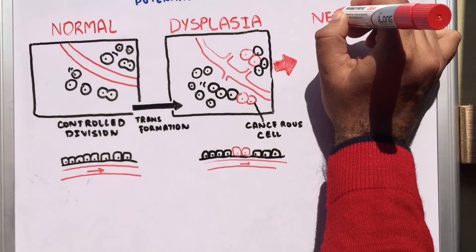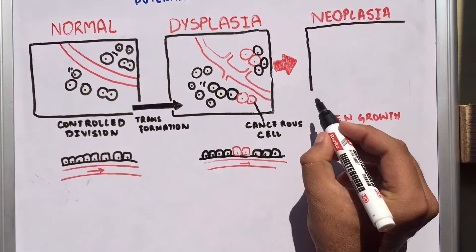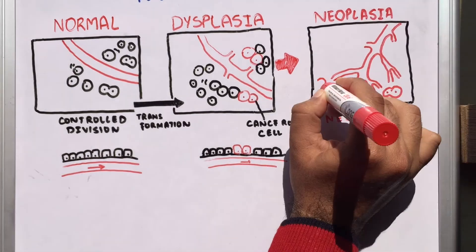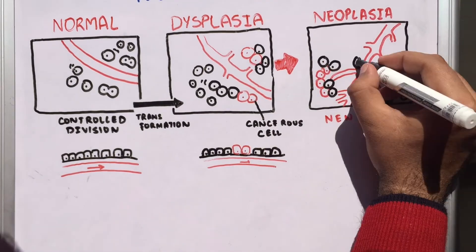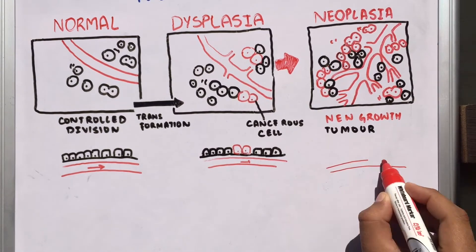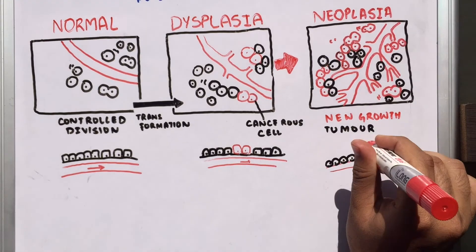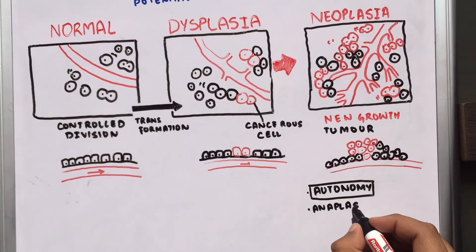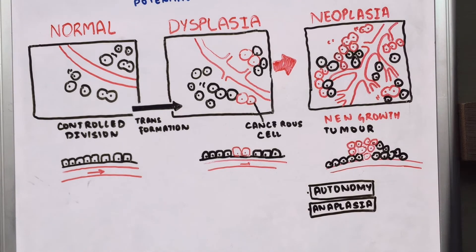With further progression of the disease, a neoplasia forms, meaning a new growth or tumour. This growth is ceaseless, uncontrolled, uncoordinated, and purposeless. We can see that the cells stack one upon each other in an uncoordinated manner. Cancerous cells possess two characteristics: autonomy, referring to independence from normal cellular control, and anaplasia, which is the loss of differentiation and organization.